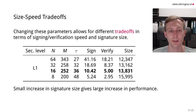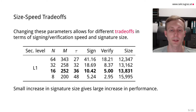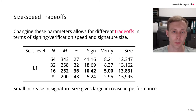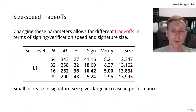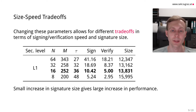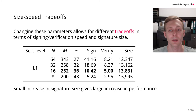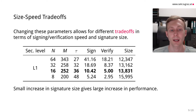As we can see, the first row gives the current parameters of Picnic2. If we reduce the number of parties, we gain a small increase in signature size but a much larger increase in signing and verification speed. So these trade-offs can be worthwhile and will form part of the building block for Picnic3.